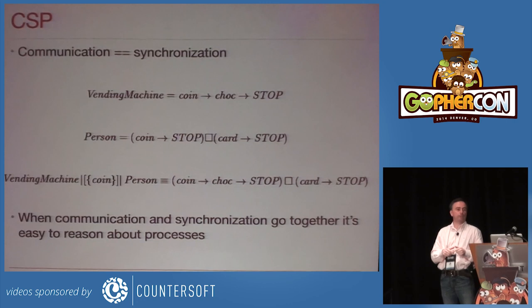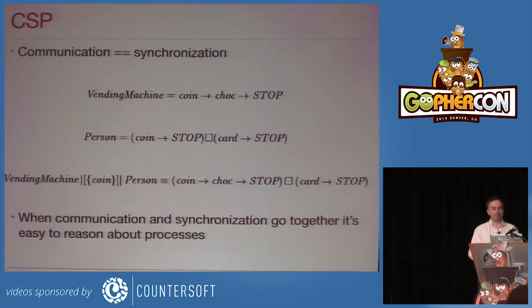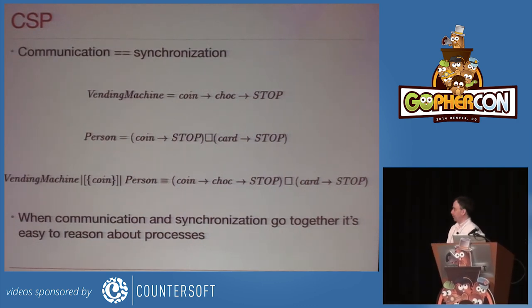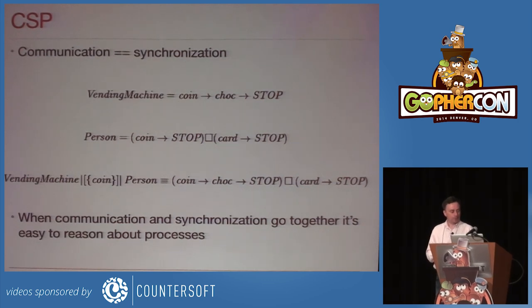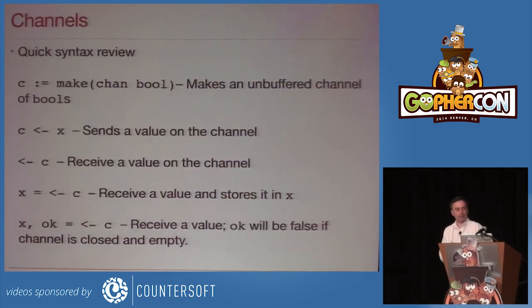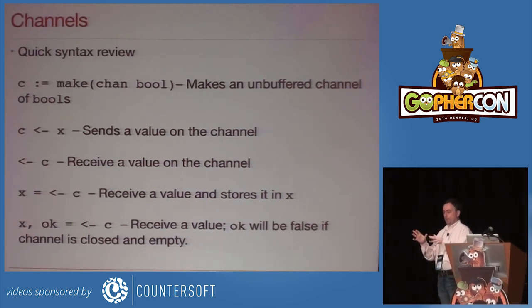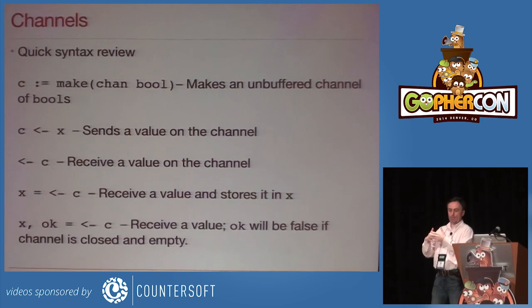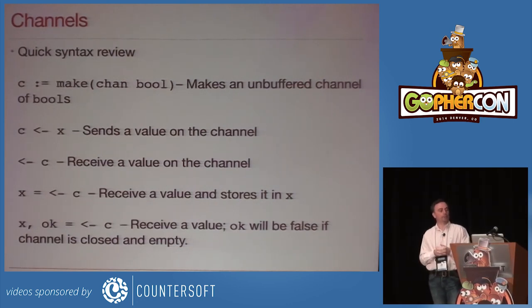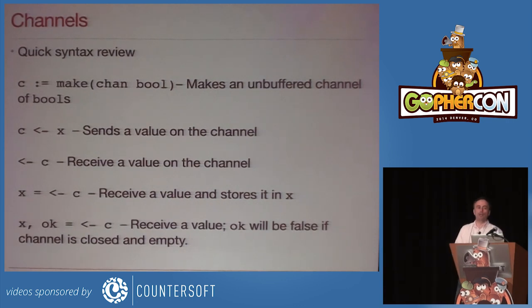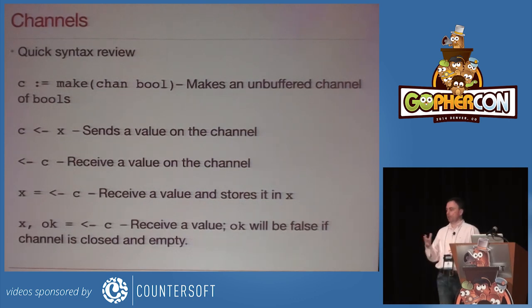Has anybody other than me programmed in OCaml here? We can have a support group or something afterwards. OCaml had very similar syntax for channel communication. In Go there's this nice idea of channels — these communications. Just like in CSP, they are essentially bi-directional; you can communicate in either direction. There's an agreement between two processes to communicate. Some of this is quite introductory, some of it gets more and more complicated — we'll see how far I get. Obviously, sending and receiving on channels. You can also find out if a channel is closed or not, which turns out to be quite useful.